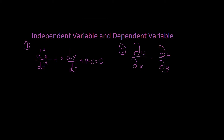This is video number two for differentials. We need to know what makes something independent and what makes something dependent for our differential equations. Our first example says d squared of x divided by dt squared, plus a times d of x divided by dt, plus k — which is the coefficient/constant — times x, which equals zero.